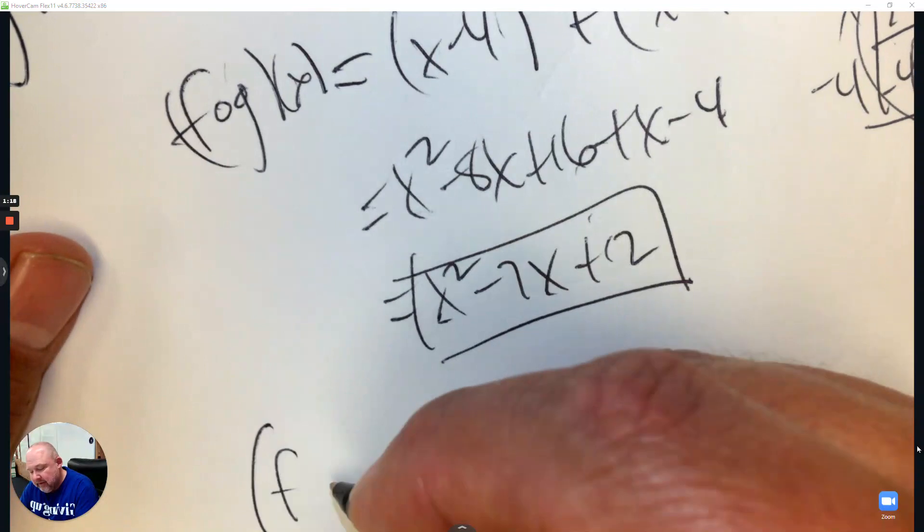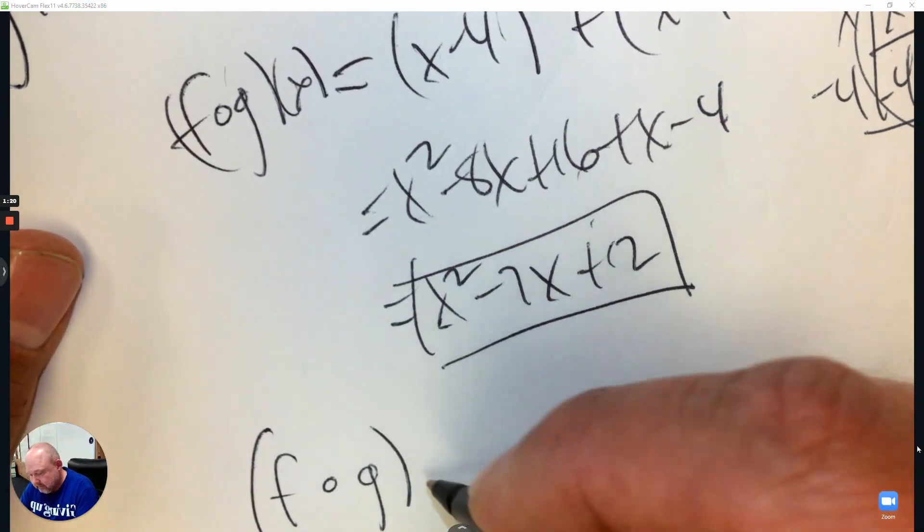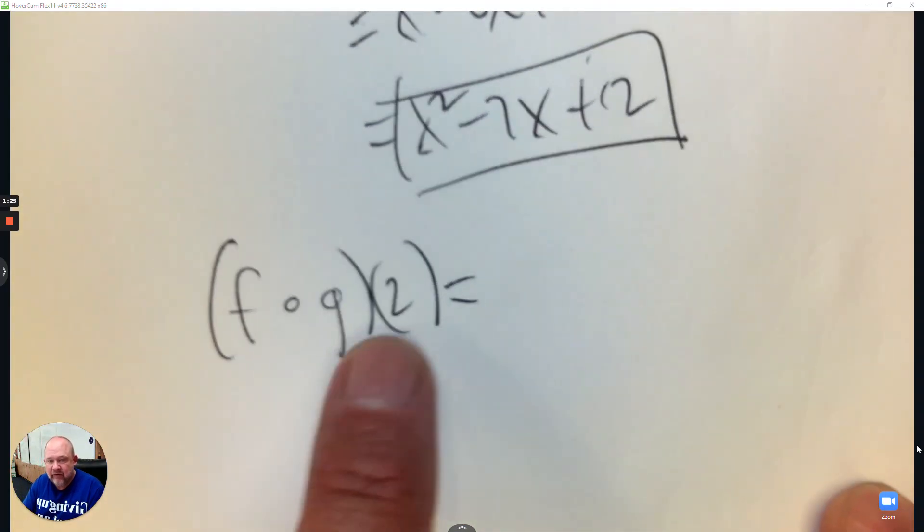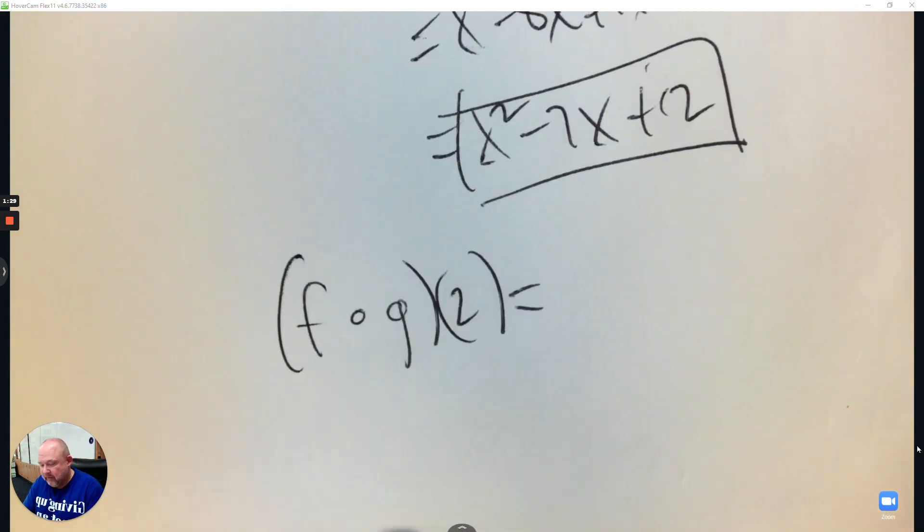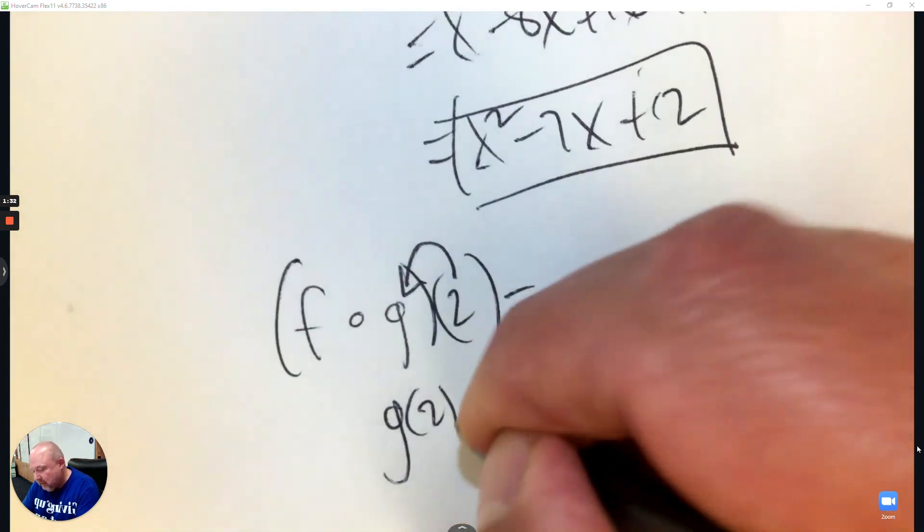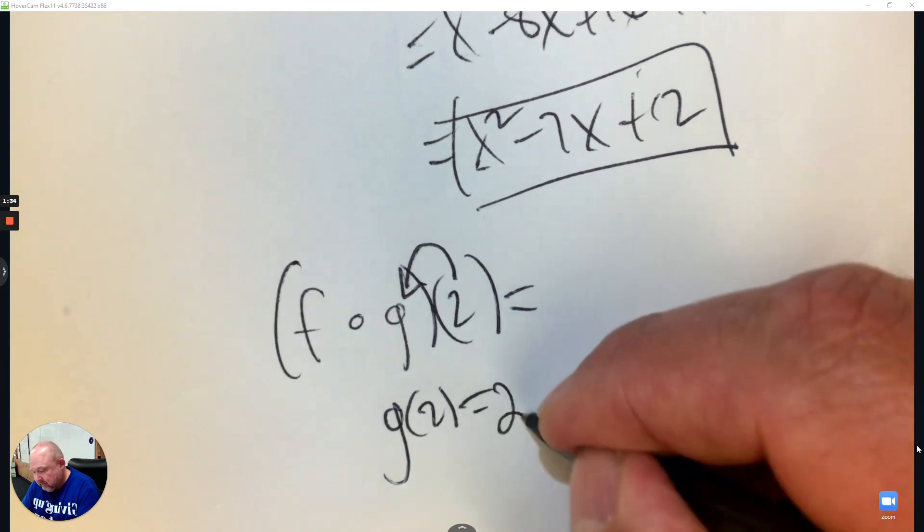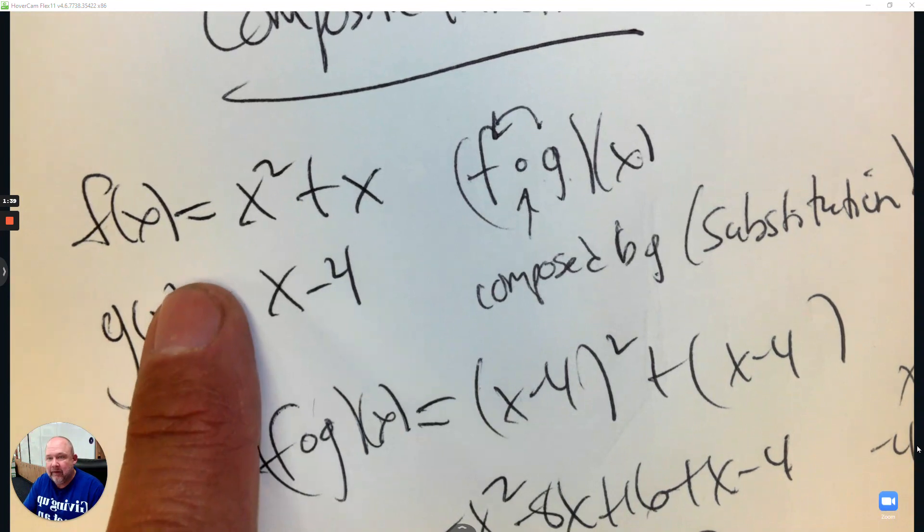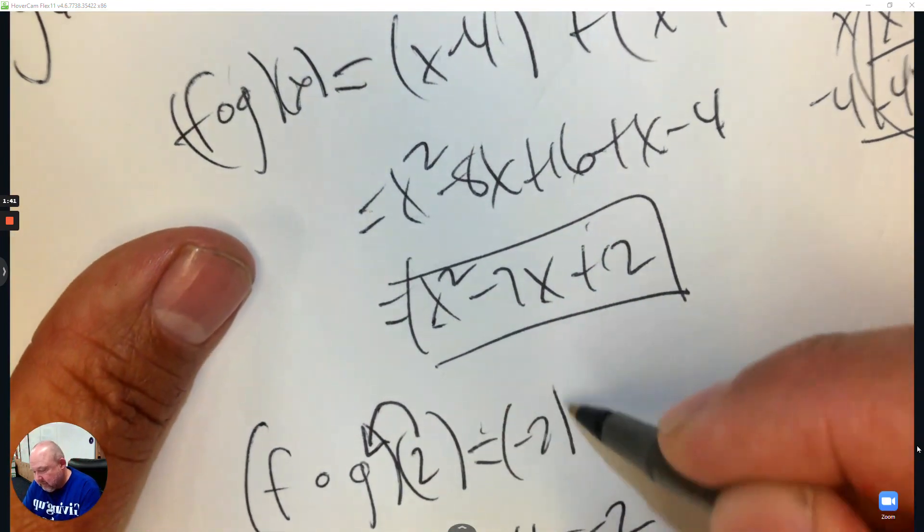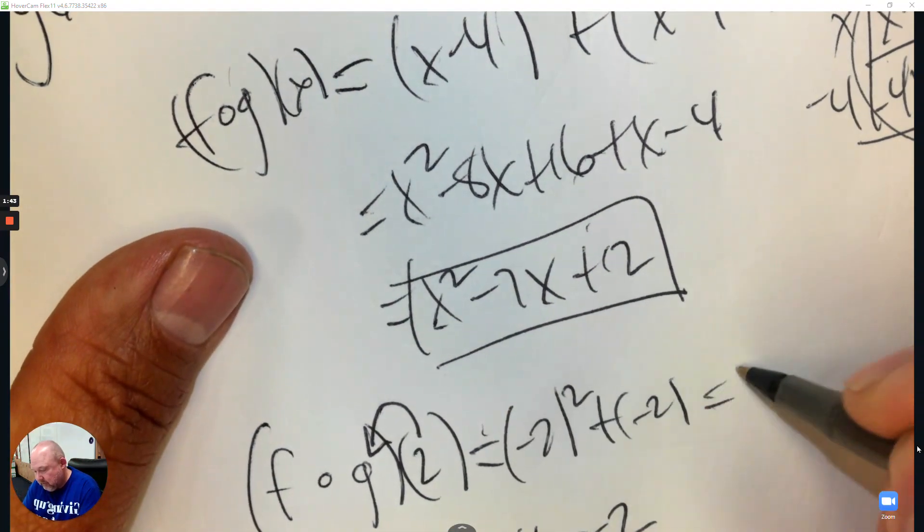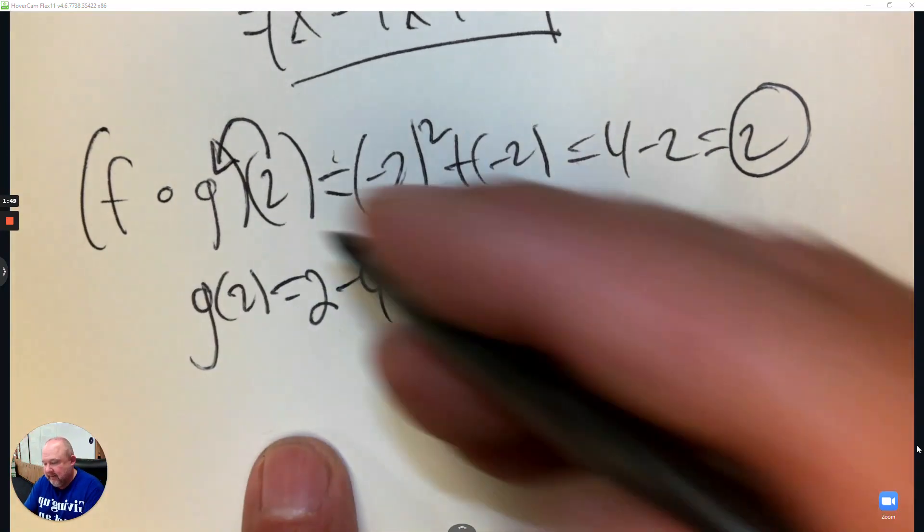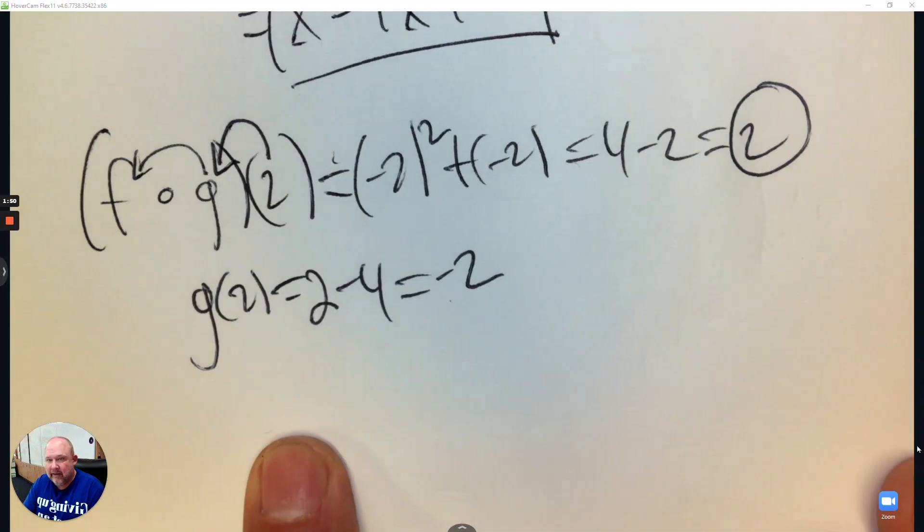So let's say it's f composed by g at 2. How would you do that? And so this again is a substitution question. 2 would be plugged into g first and get an answer. So that's 2 minus 4. Get that answer, which is negative 2. Then that answer would be plugged into f. So that's negative 2 squared plus negative 2. And then you get your answer. So you first plug it into g and then take that answer and plug it into f.